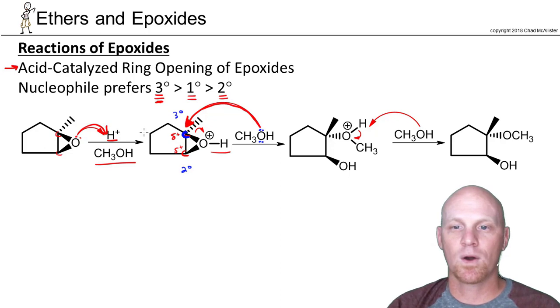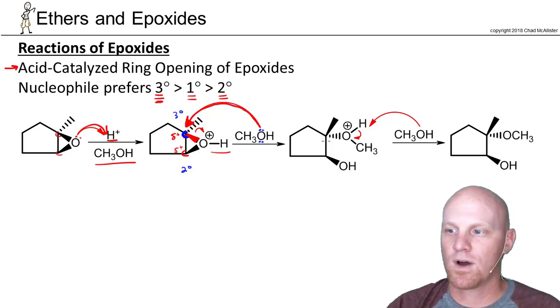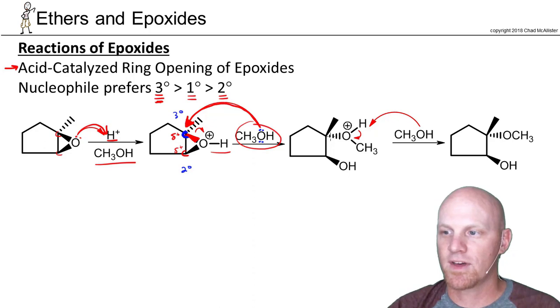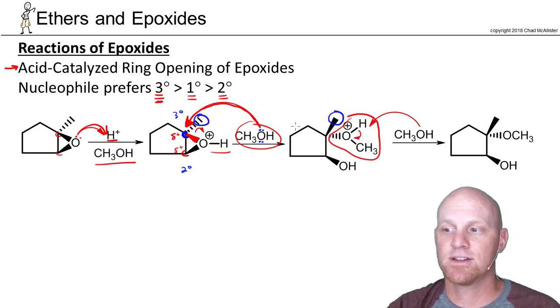In this case where we attack we still get inversion of configuration. If you notice our epoxide here is on the wedged bond, and so if we do backside attack before breaking that open, what we attach is going to now be attached by the dashed bond. That's why our methanol here that just attached is now on the dashed bond. It's also why this methyl group right here gets inverted and flipped around to the other side. There's your inversion of configuration, once again taking place on the carbon you attack.